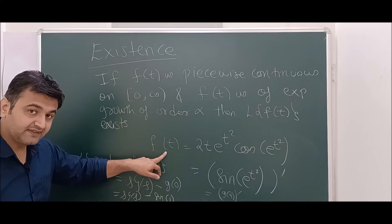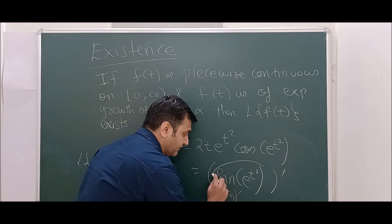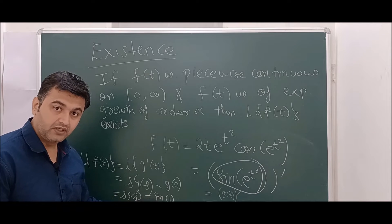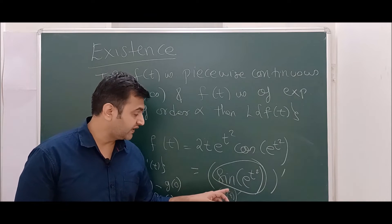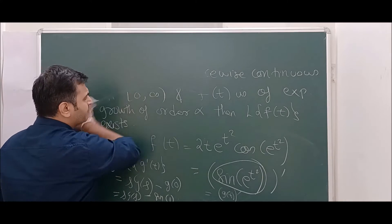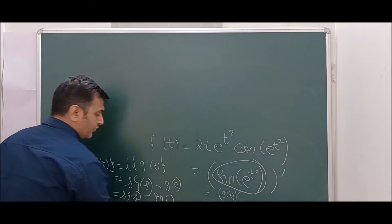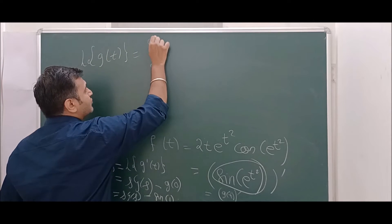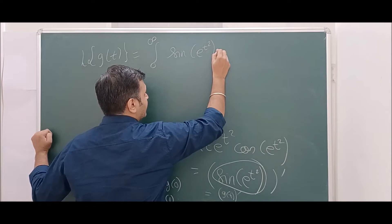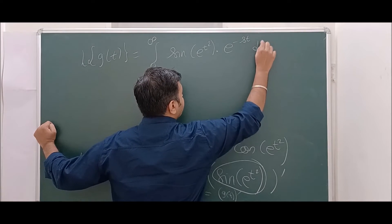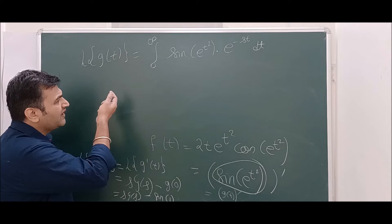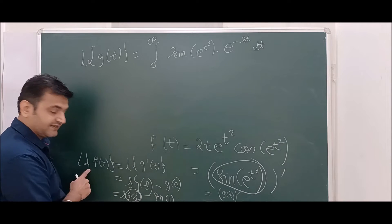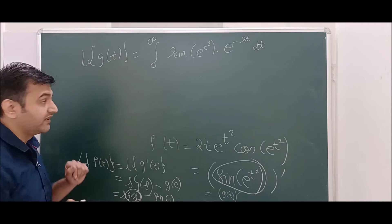To show that the Laplace of g(t) = sin(e^(t²)) exists, by definition it is the integral from 0 to ∞ of sin(e^(t²)) · e^(−st) dt. I don't need to find the value — I just need to show it exists. Taking the modulus on both sides: the modulus of the integral is less than or equal to the integral of the modulus.